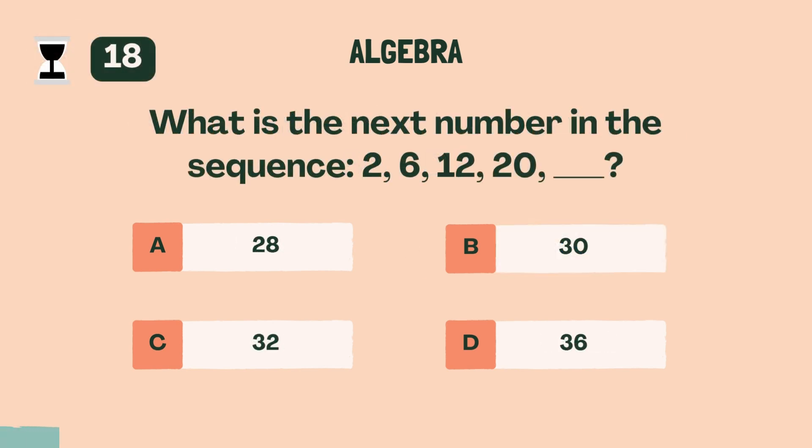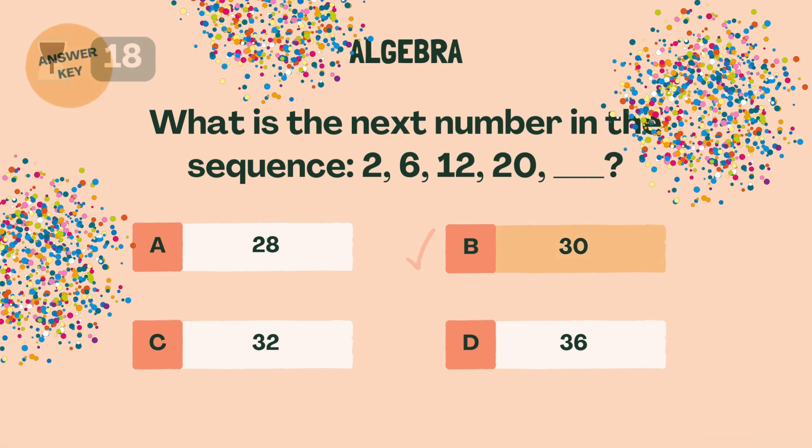What is the next number in the sequence? 2, 6, 12, 20. B, 30.